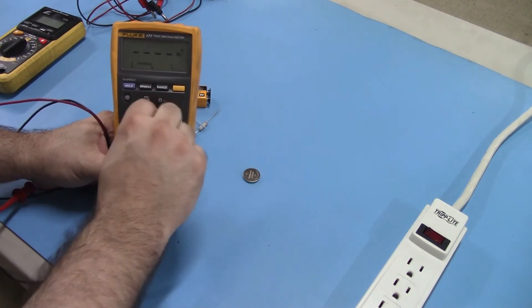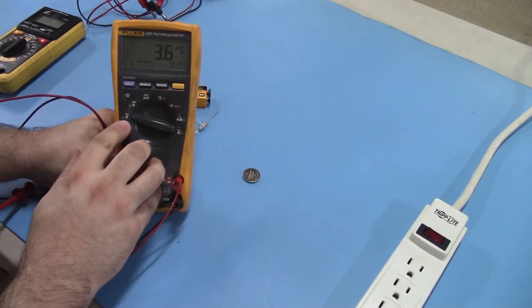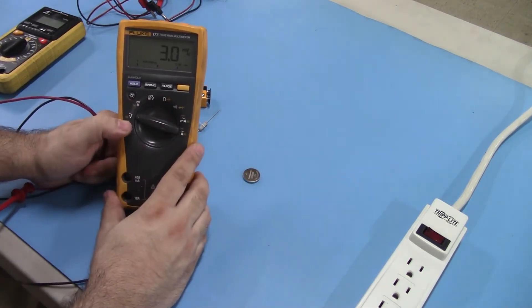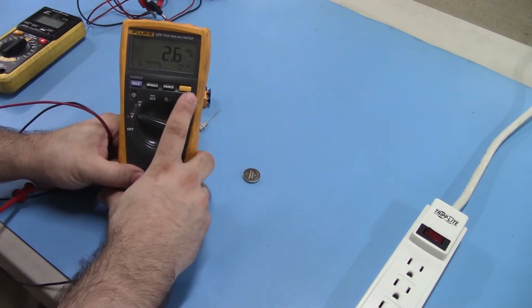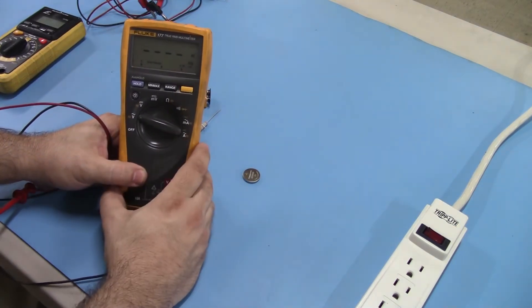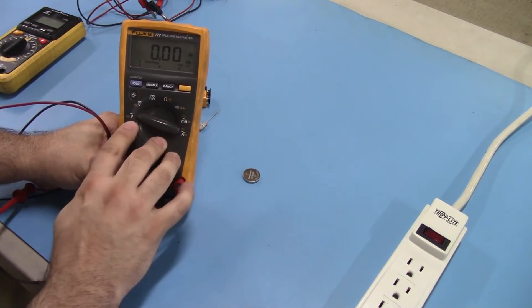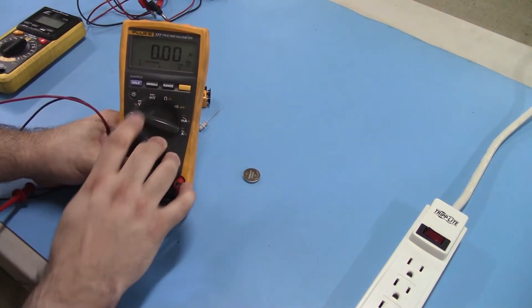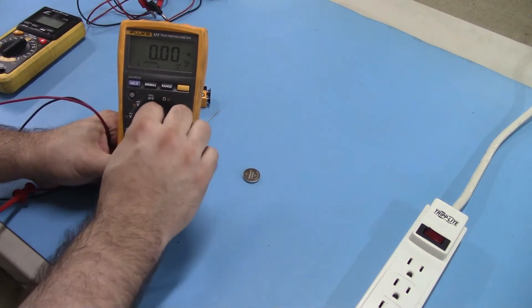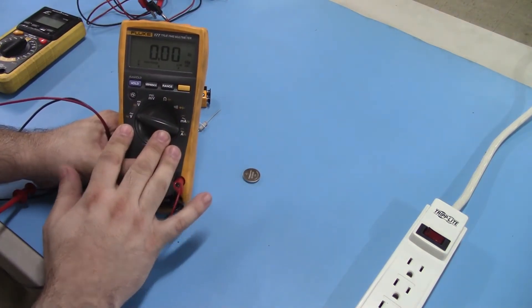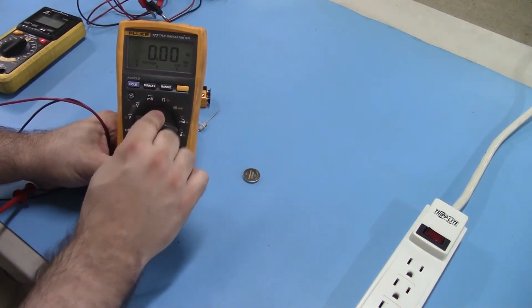Let's flip it back to AC volts there. Whenever we're on AC volts and we hit our yellow button, it switches to hertz, HZ. That allows you to take your frequency measurements on AC circuits, DC circuits as well. Another important measurement to take on generators is your frequency.